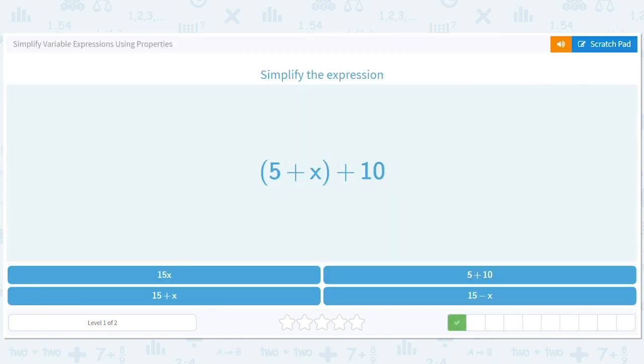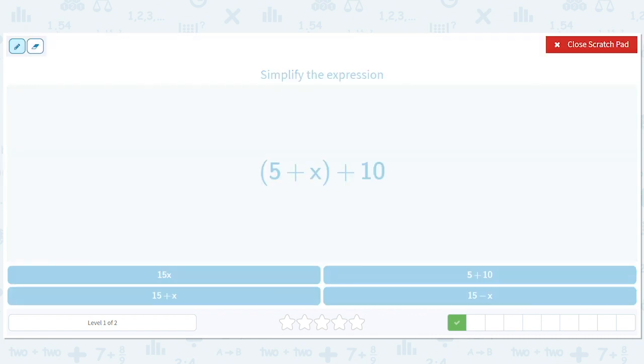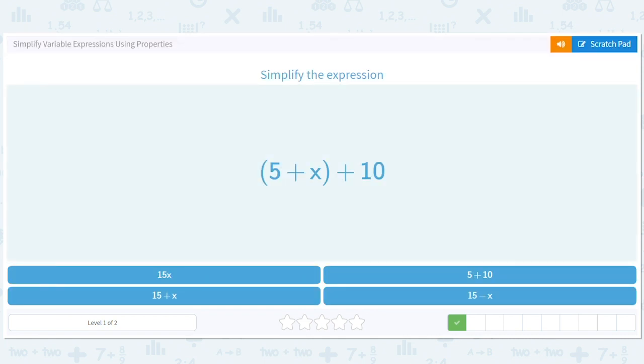Okay, so again, commutativity of addition gives us x plus five, that means we can swap. We can also use associativity to move the parentheses over, which means we can group however we want when we're adding. We get x plus 15, or 15 plus x.